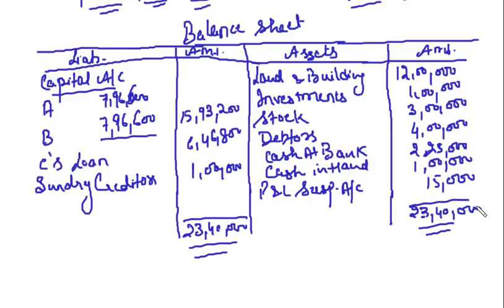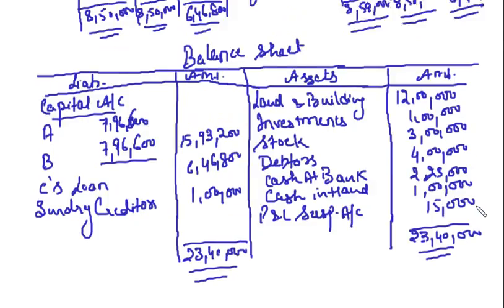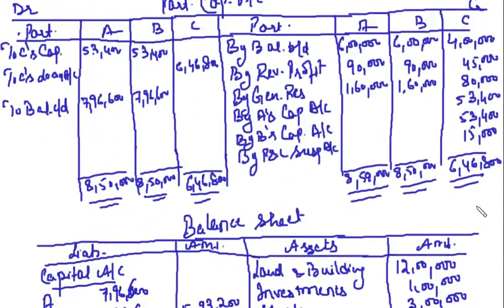This is how you treat retirement during the accounting period. It is very simple - just one more adjustment is added, which is the calculation of share in profits till the date of retirement. For that, take the average of past profits, calculate for the number of months till retirement, and calculate the share of the retiring partner. In Case 1, transfer to P&L Suspense Account; in Case 2, calculate gaining ratio and debit remaining partners.